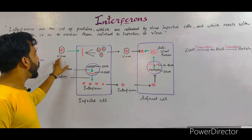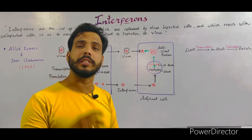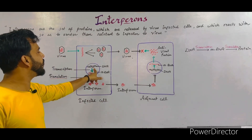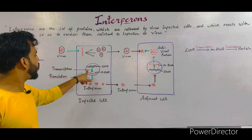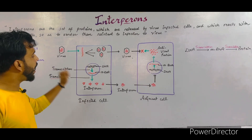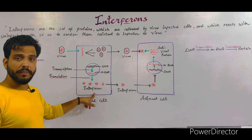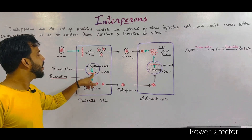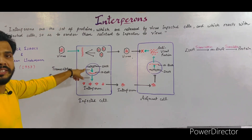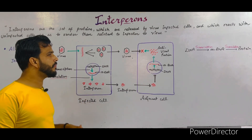In this infected cell, after the virus infection, protein synthesis takes place and an interferon — which is a signaling protein — is formed. First, the DNA of the cell produces mRNA inside the nucleus, which is the process of transcription. Then this mRNA comes into the cytoplasm and produces a protein known as interferon through the process of translation. So transcription takes place inside the nucleus, translation takes place in the cytoplasm, and as a result of protein synthesis, interferons are produced.